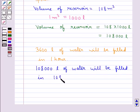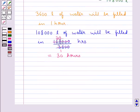108,000 divided by 3600 hours. These two zeros get cancelled with these two zeros, and 36 times 30 is 1080, so we have this is equal to 30 hours. 30 hours time will be taken to fill the tank.